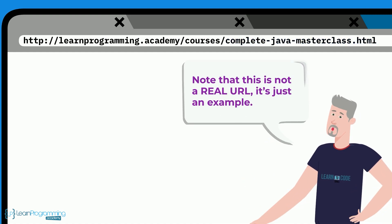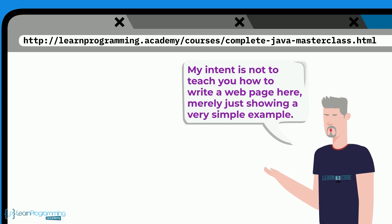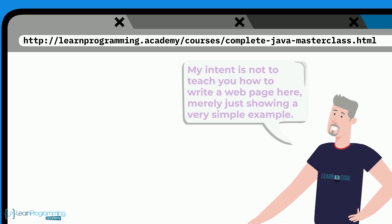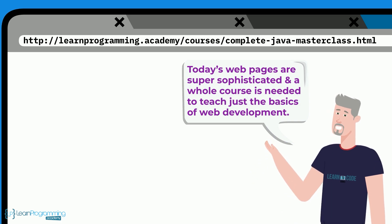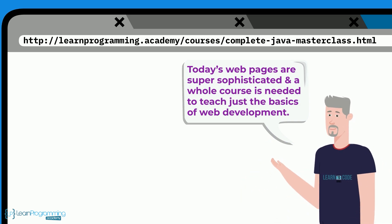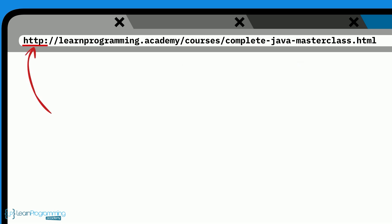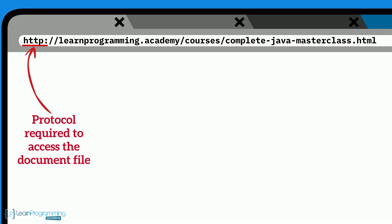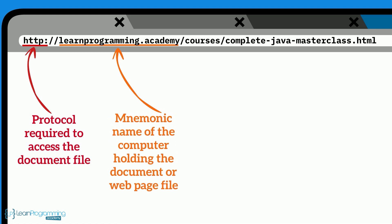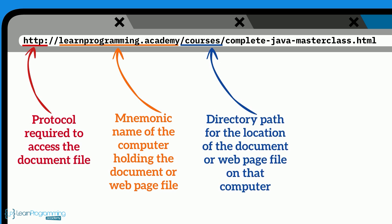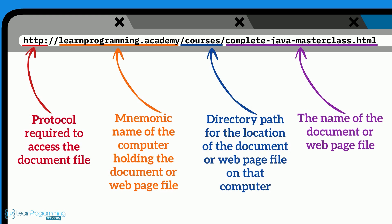Note this is not a real URL, it's just an example. The HTTP, Hypertext Transfer Protocol, is the protocol required for this request being sent from your browser. Learnprogramming.academy is the mnemonic name of the computer holding the web page file. The slash courses slash is the directory path on the computer where the web page file is located, and complete-java-masterclass.html is the name of the document or web page file.